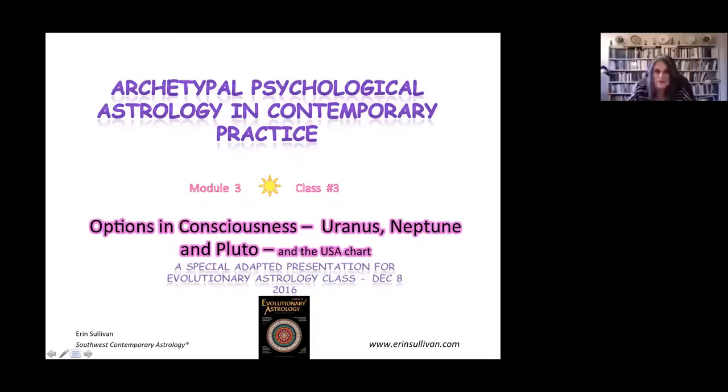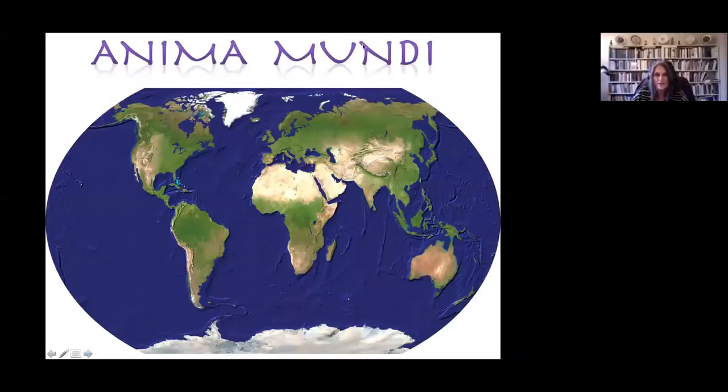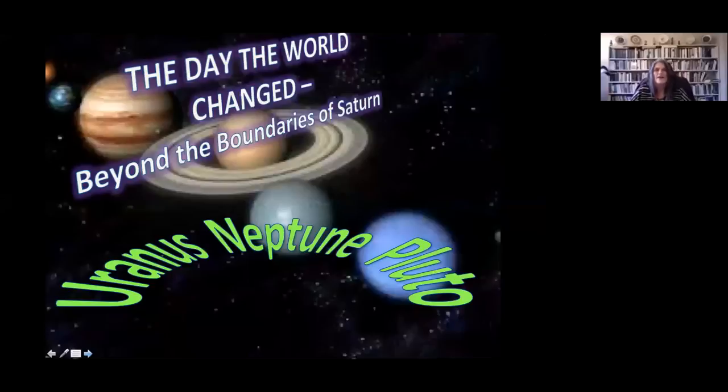Thank you very much for that lovely introduction. Okay, options in consciousness: Uranus, Neptune, and Pluto. We're going to include the USA chart because it happens to be bristling with activity. Right now I'm just going to show you one of my favorite little pictures I plucked off the internet—the whole world as we imagine it without boundaries, without bombs going off. The best point of the talk today is a foreshortened one because it's been condensed from a two-hour seminar.